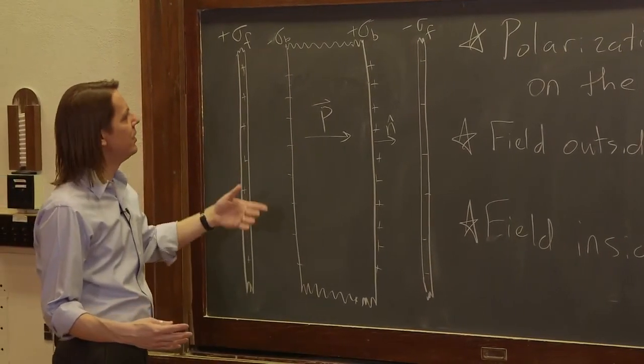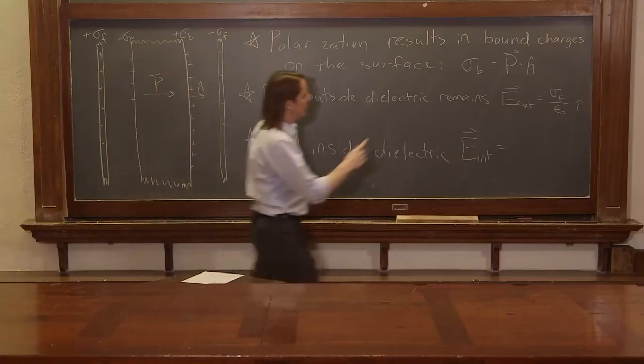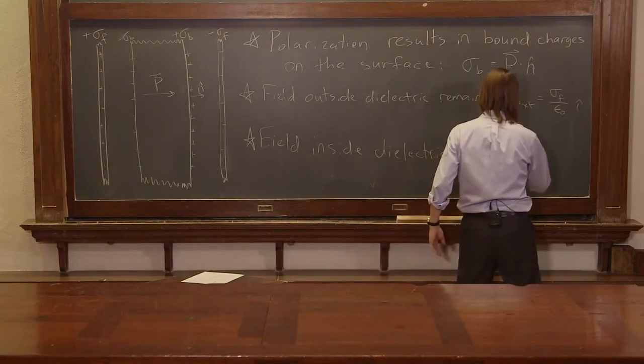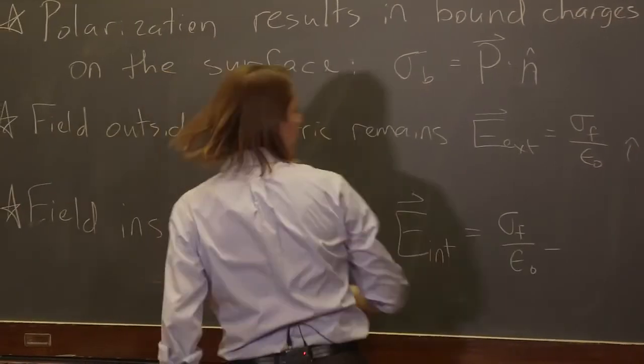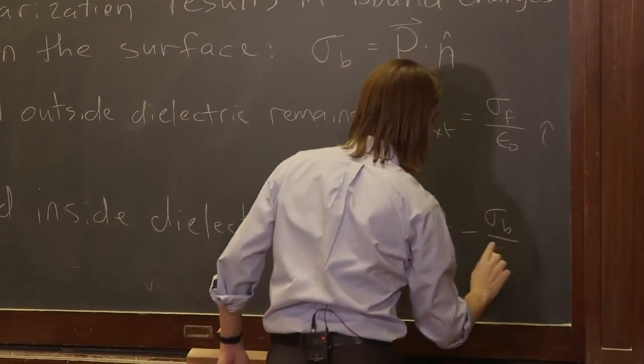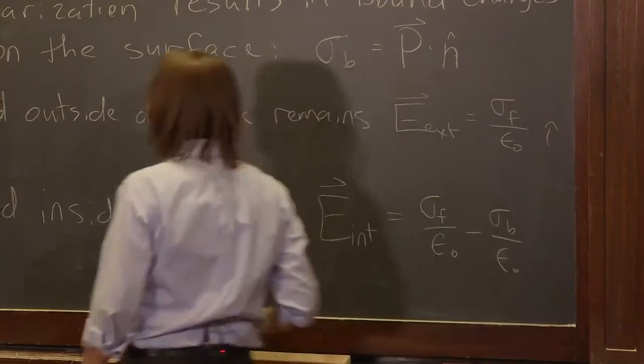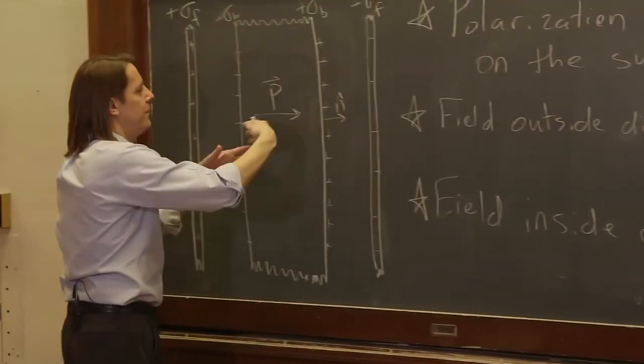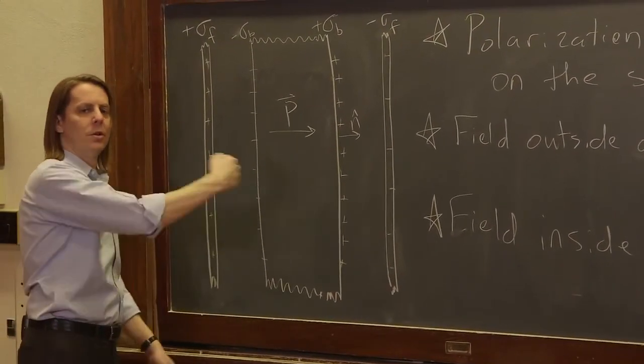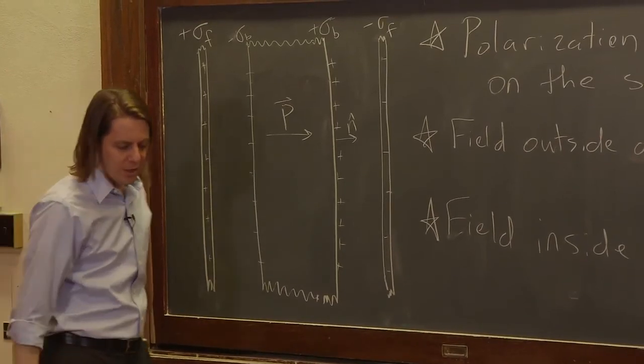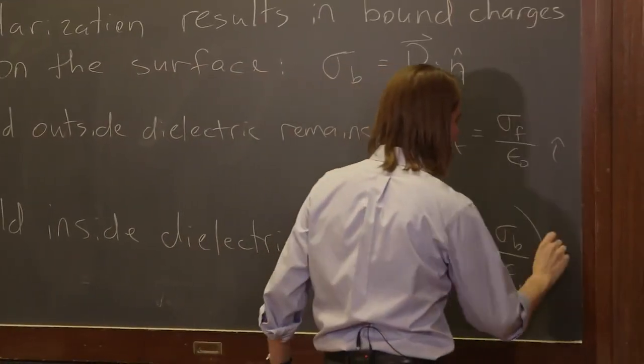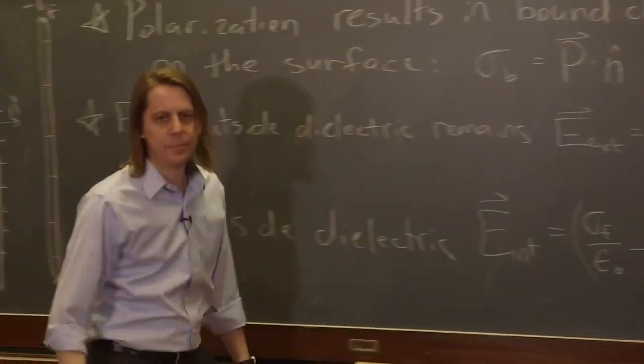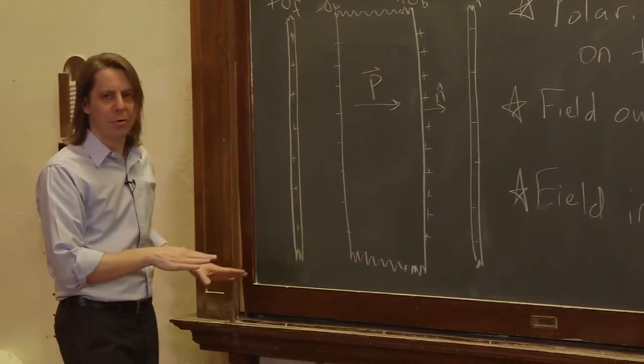So it's E external, sigma free over epsilon naught, minus sigma bound over epsilon naught. Because you can see, the field created by the bound charge goes the other way. So it's going to make the field internal, inside smaller. And if I had to put a unit on it, I'd make it go that way. Okay? So we're making a little progress.